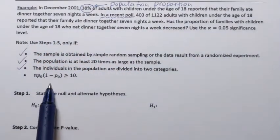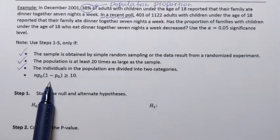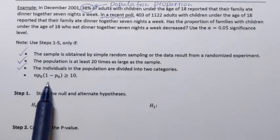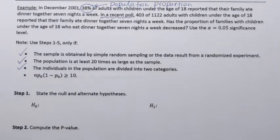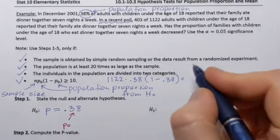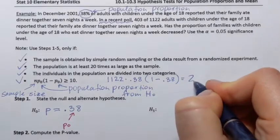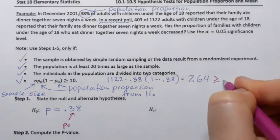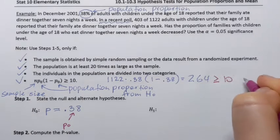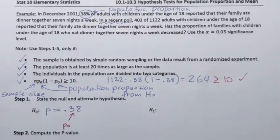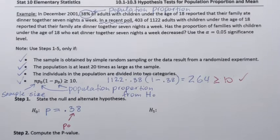The last condition under which we will be able to use the normal distribution is that the following inequality is satisfied. The result is 264, which is of course greater than or equal to 10. That means the last condition is satisfied and we can continue with the steps.